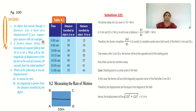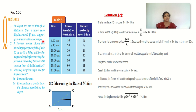Displacement is the shortest distance between the initial and final position of an object. If after moving a certain distance the object returns to its initial point, the initial and final positions are the same, so there is no displacement. We can say that when the initial and final position of the object is the same, the displacement is zero. So the answer for the first question is: yes, the object may have zero displacement only if its initial and final position is the same.